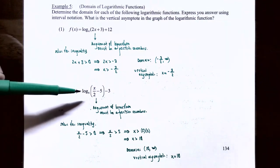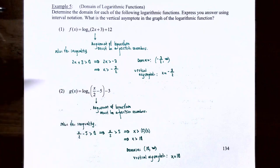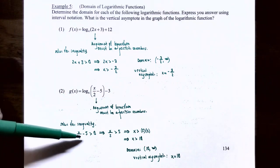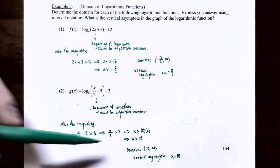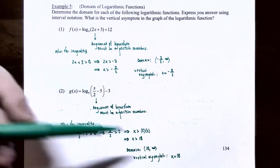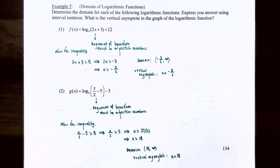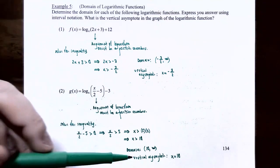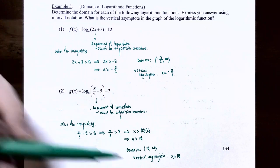Number two: g of x equals log base 6 of the quantity x divided by 2 subtract 5, then subtract 3 outside the argument. The argument x divided by 2 subtract 5 must be greater than 0. Adding 5 to both sides gives x divided by 2 greater than 5, then multiplying both sides by positive 2 gives x greater than 10. So the domain is 10 to infinity, not including 10, and the vertical asymptote is at x equals 10.